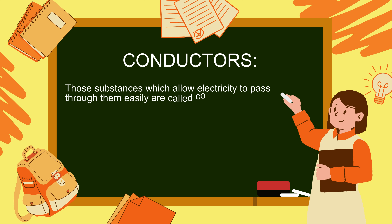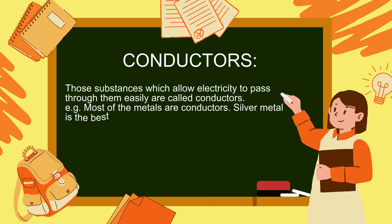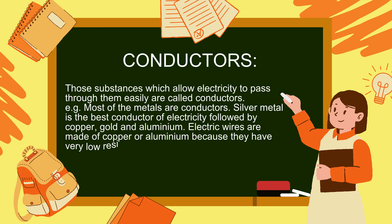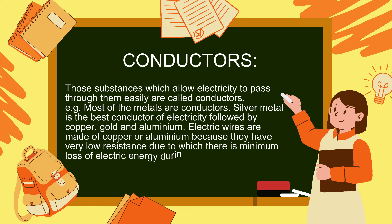Conductors: those substances which allow electricity to pass through them easily are called conductors. Most metals are conductors. Silver is the best conductor of electricity, followed by copper, gold, and aluminum. Electric wires are made of copper or aluminum because they have very low resistance, resulting in minimum loss of electric energy during transmission.